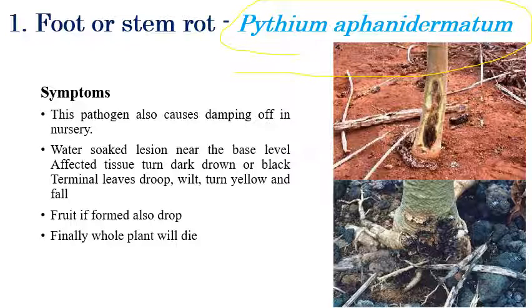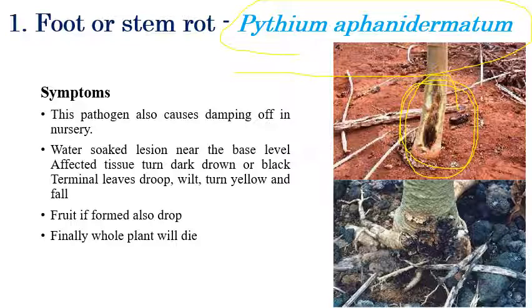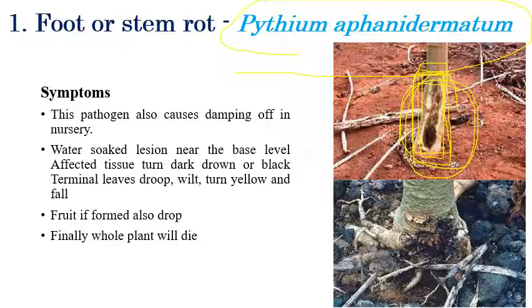Looking at the symptoms, initially water-soaked lesions appear on the stem regions immediately above the soil. The infected tissues are then converted into dark brown or black color, which can be clearly observed on the stem. Drooping of leaves and yellowing of leaves can also be clearly seen.